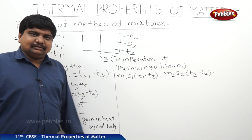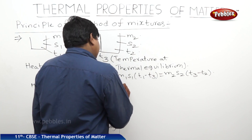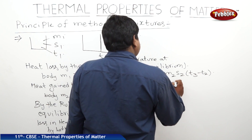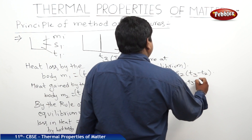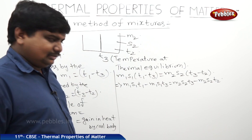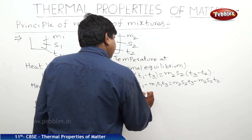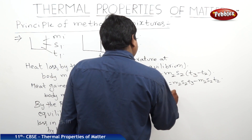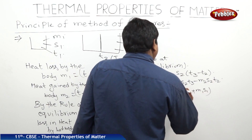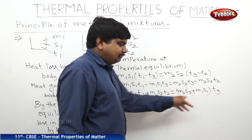Now we should find out the junction temperature, or common temperature, T3. To do so, expand the equation and bring all T3 terms to one side and the remaining terms to the other side.